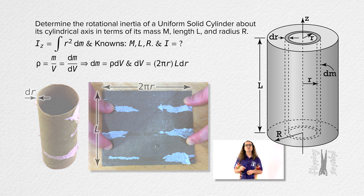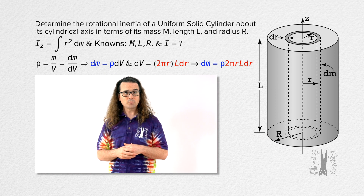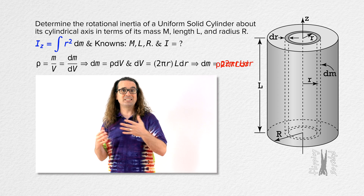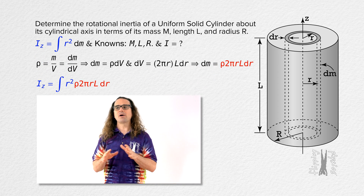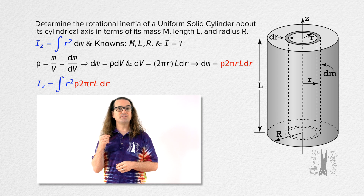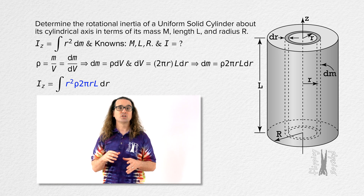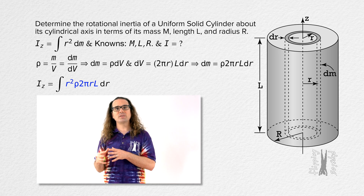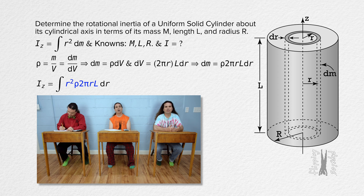Now we can substitute that equation for dV into our equation for dm, and we can substitute our equation for dm into our equation for moment of inertia. Please identify which of these are constant with respect to r — the distance from the axis of rotation to dm — so we can take them out from under the integral to simplify.